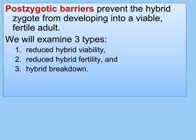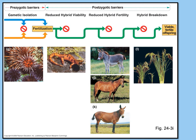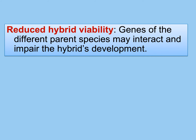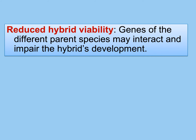The second post-zygotic possibility is that a hybrid forms but fertility is affected. A donkey and a horse can reproduce, and the mule produced is usually infertile. The third possibility is that hybrids are fertile, but over a few generations something breaks down — hybrid breakdown is the last barrier. You get a hybrid that can even reproduce, but eventually the whole thing doesn't work out.